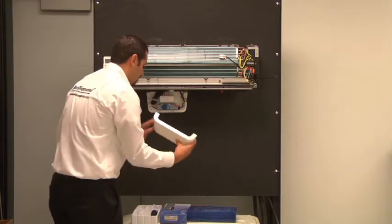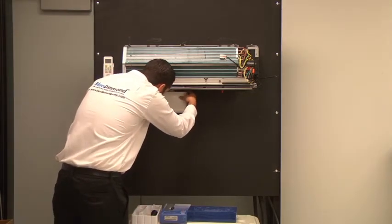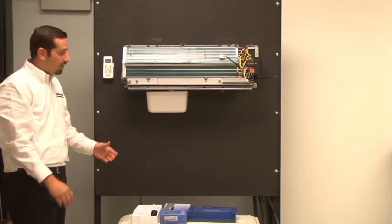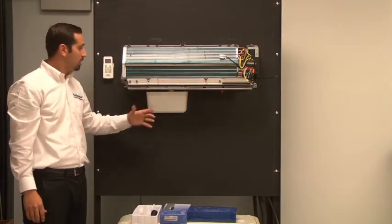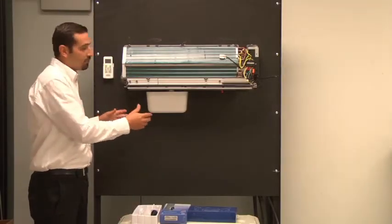To button up the install, last thing we're going to do is we are going to apply the cover. Now you have a micro blue and a fascia kit installed with your carrier mini split. Now we'll put the cover back on and we'll be ready for operation.